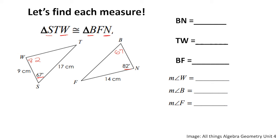To find angles T and F, we use the triangle angle sum theorem: all three angles in a triangle sum to 180 degrees. We take 180 and subtract 67 and 82, which leaves us with 31. So angles T and F are both congruent — they are each 31 degrees.